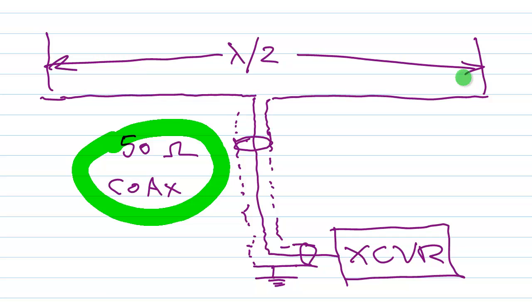In free space, a half wavelength antenna, an electrical half wavelength dipole antenna, has a radiation resistance of about 73 ohms and no reactance. So that produces a 1.4 or 1.5 to 1 standing wave ratio on 50 ohm coaxial cable.